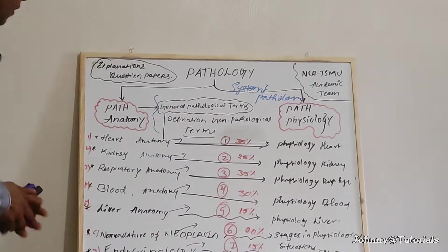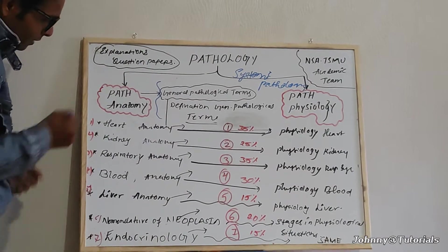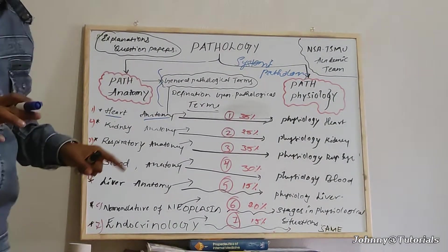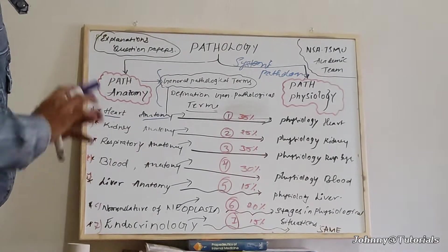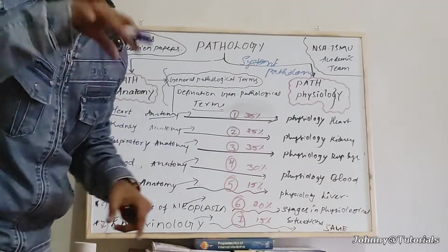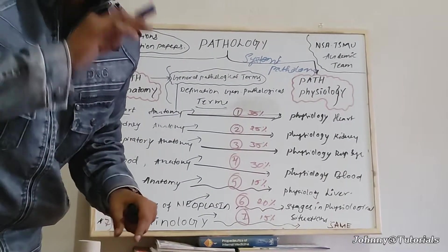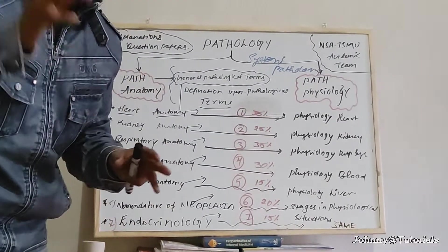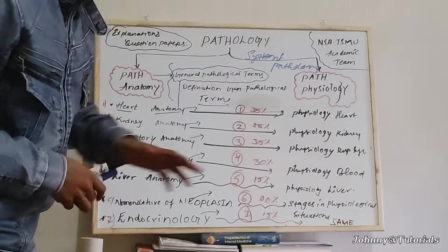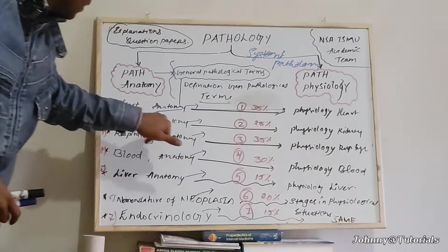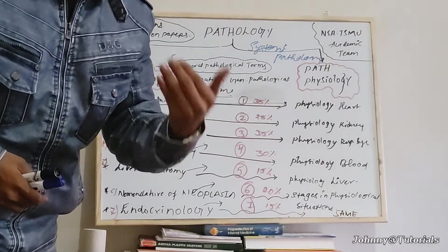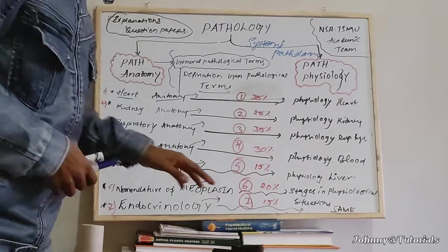First we go with the highest percentage topic: heart anatomy. Study the internal and external structures, then go to the physiology of the heart — what ions and electrolytes are involved, what physiological actions are happening. Then in the pathological situation, study conditions like myocarditis if there is inflammation, pericarditis if there is inflammation to the pericardium, and endocarditis.